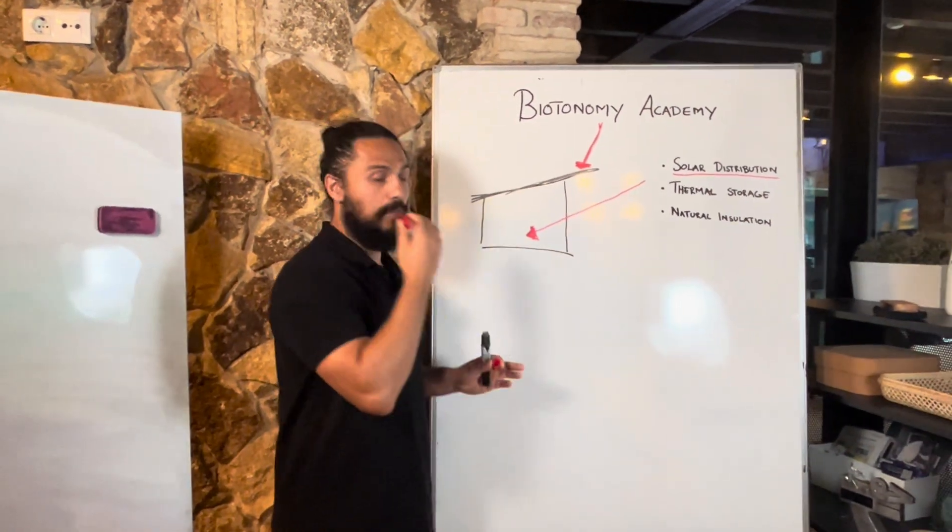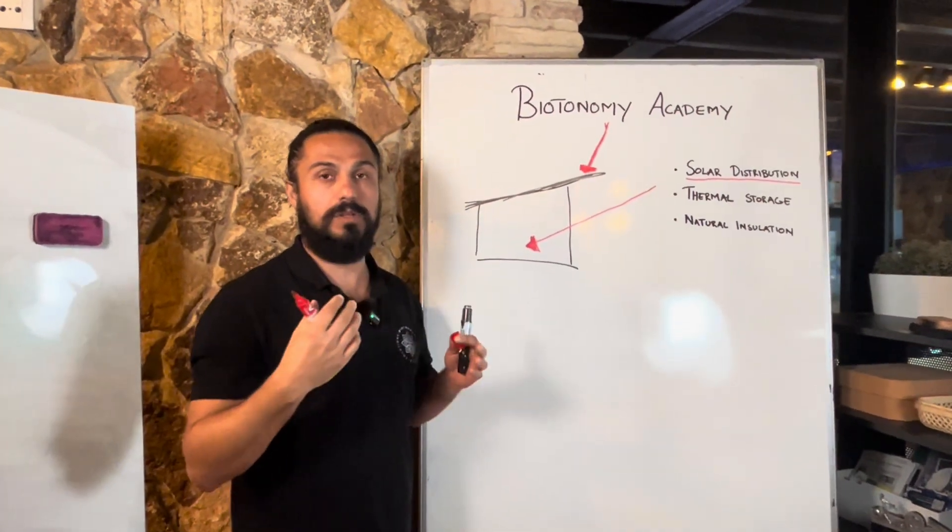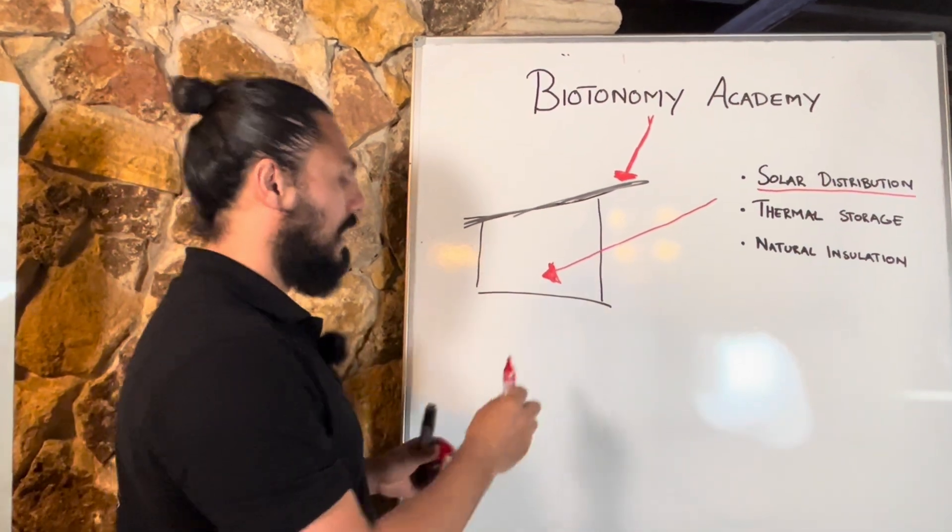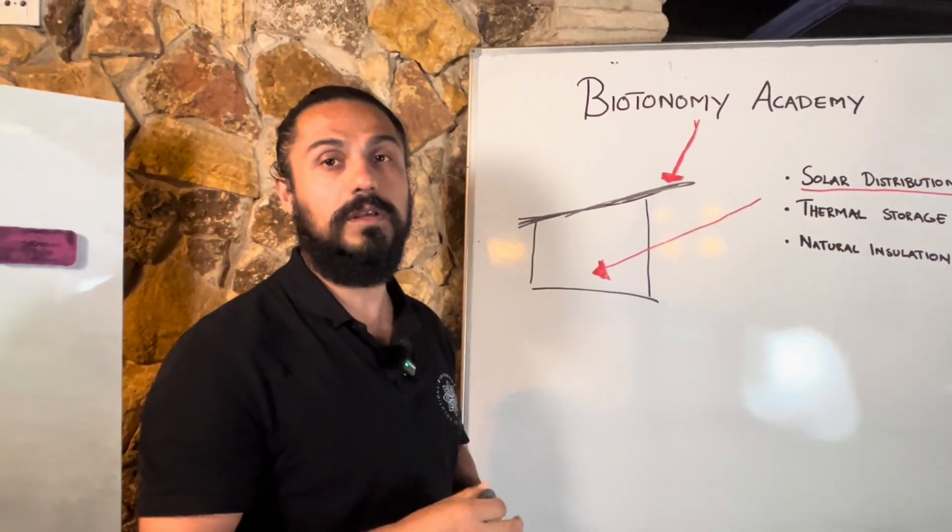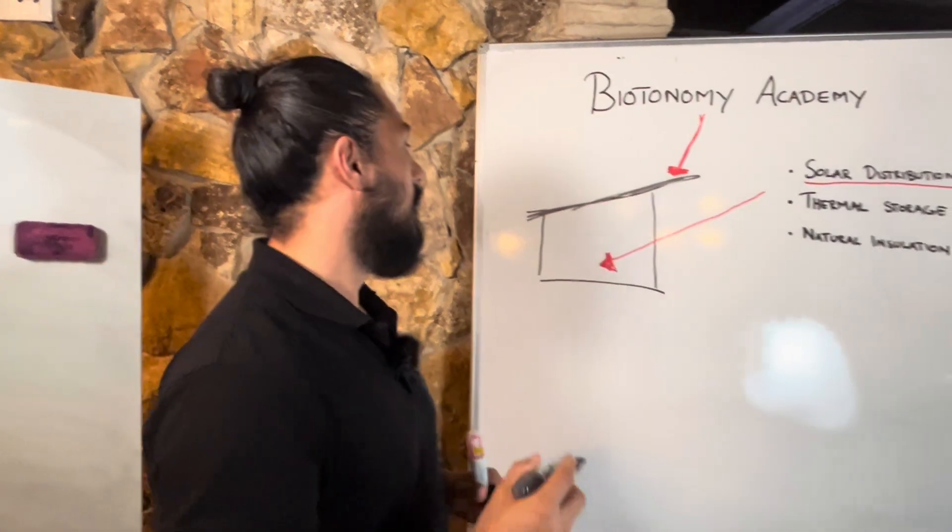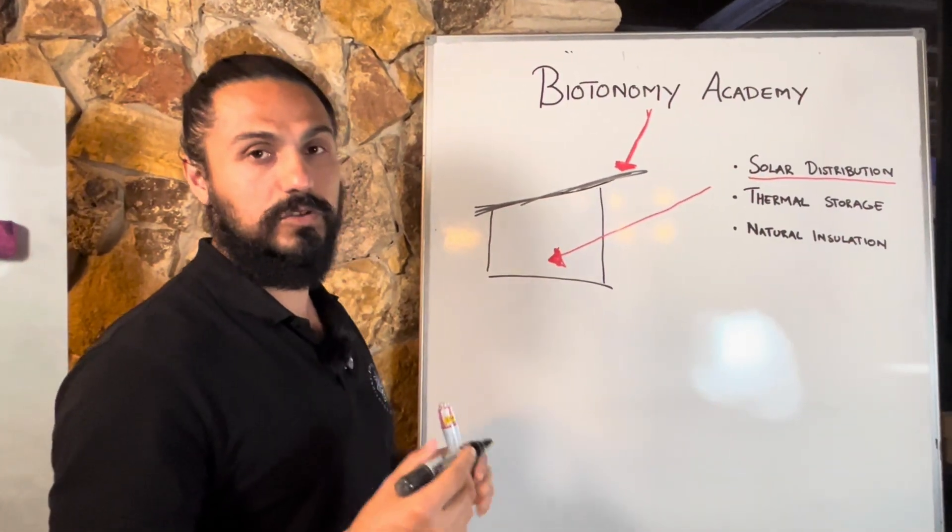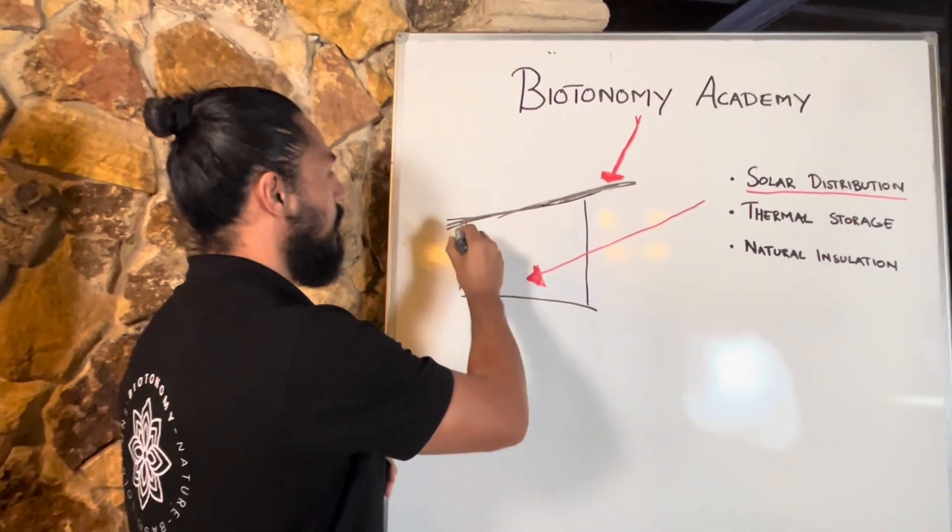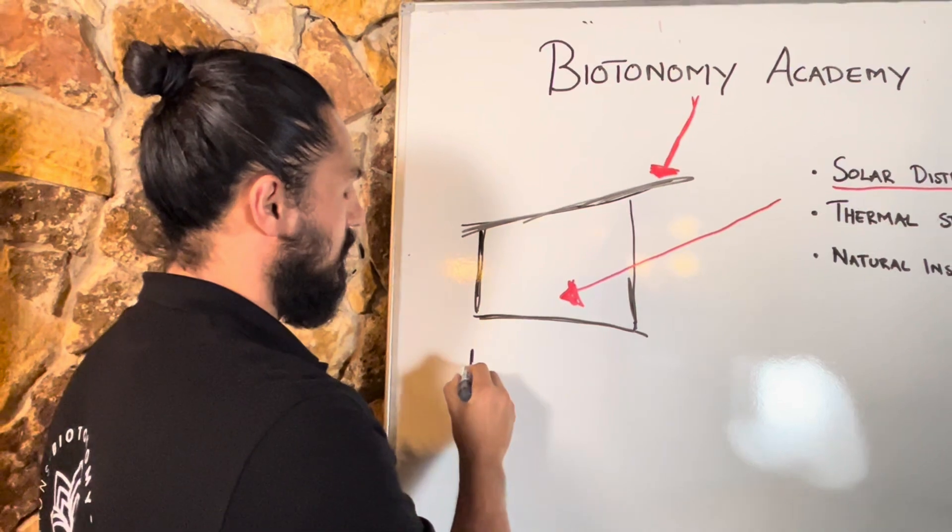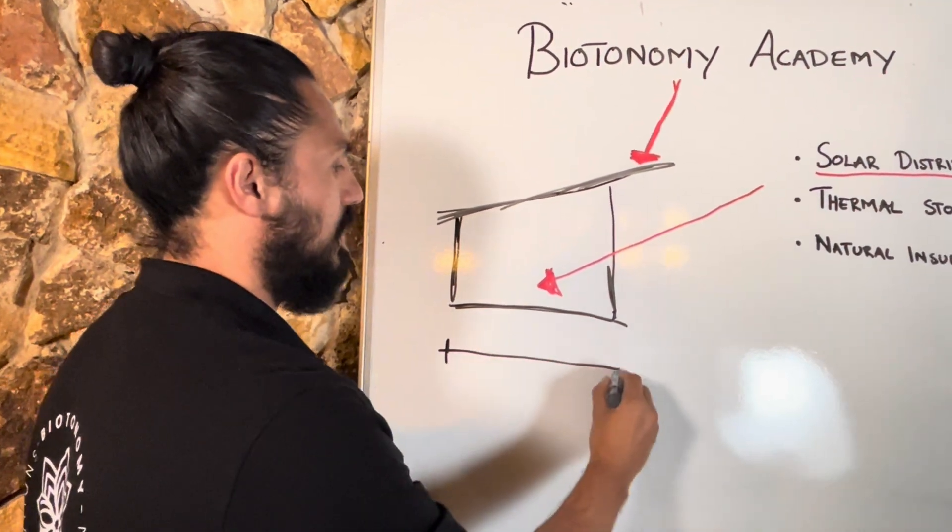So once you have oriented your building towards the sun, then you need to basically design the proportions of your building accordingly to the angle of the sun. And here are some of the key features you need to have in mind. See that the depth of the building itself, which means this dimension.